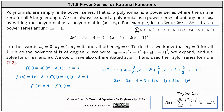We can always expand a polynomial as a power series about any point x sub zero by writing the polynomial as a polynomial in the quantity x minus x sub zero. For example, let us write 2x squared minus 3x plus 4 as a power series around x sub zero equals 1. This means we need to write 2x squared minus 3x plus 4 as a polynomial in x minus 1, which equals 3 plus the quantity x minus 1 plus 2 times the square of the quantity x minus 1.